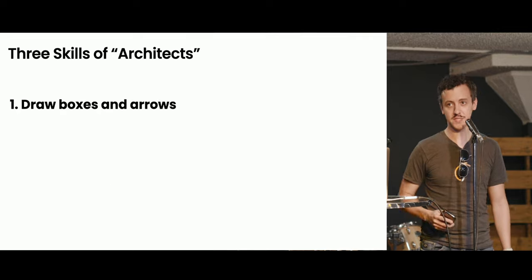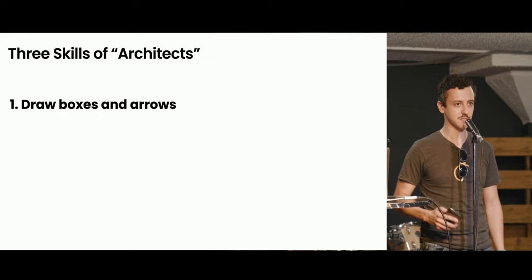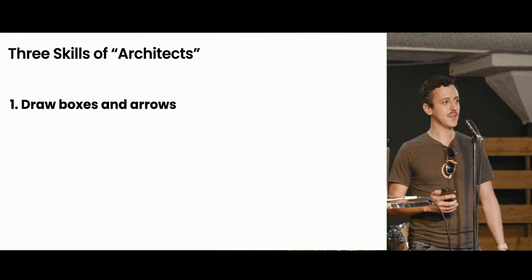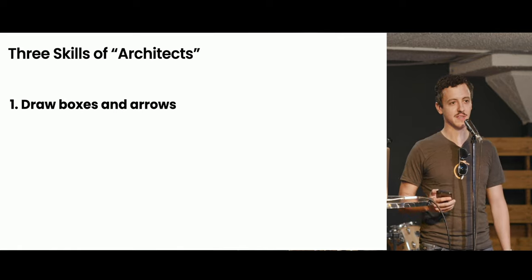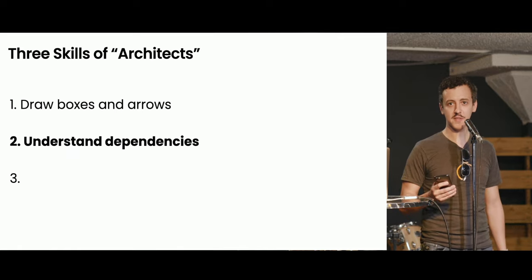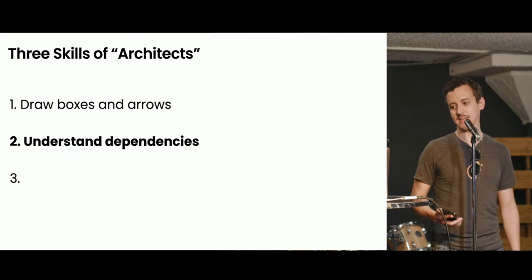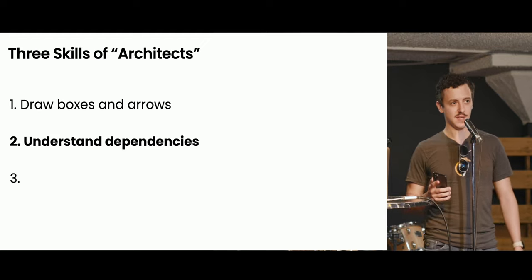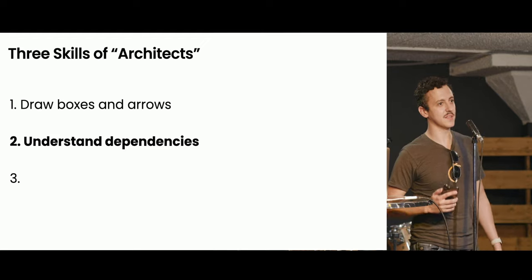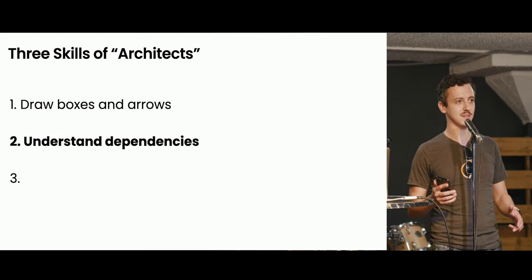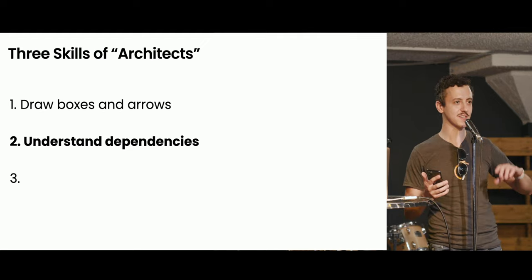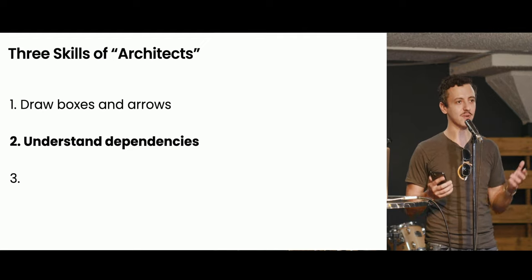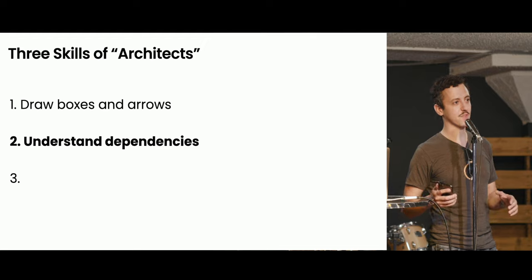The first thing is you need to be able to draw boxes and arrows — if you've got a kindergarten grasp of drawing, you're off to a good start. The second thing is understanding dependencies, and I'm kind of embarrassed to say it took me a lot longer to wrap my head around than it should have. Part of the reason for that is we use that term in very different contexts.